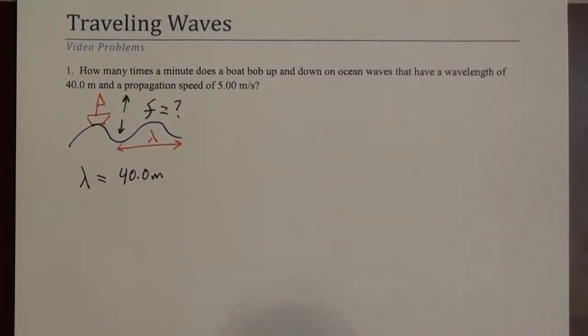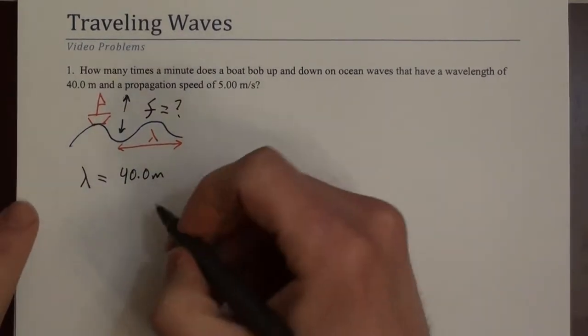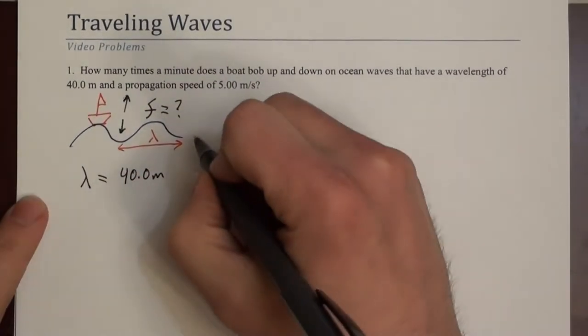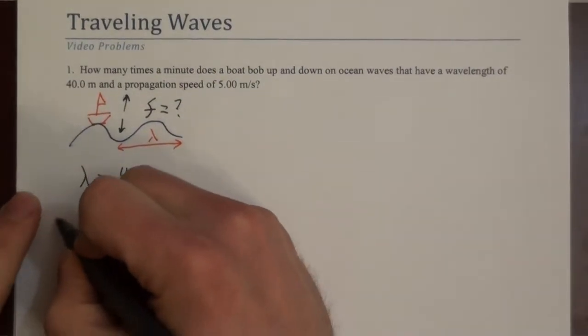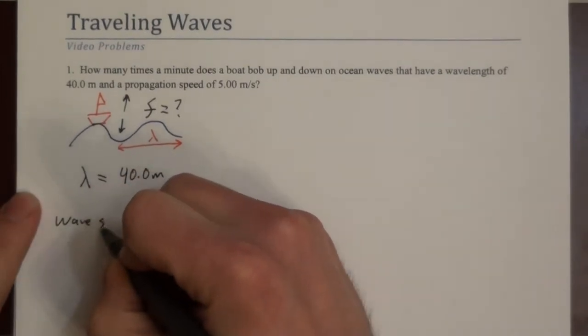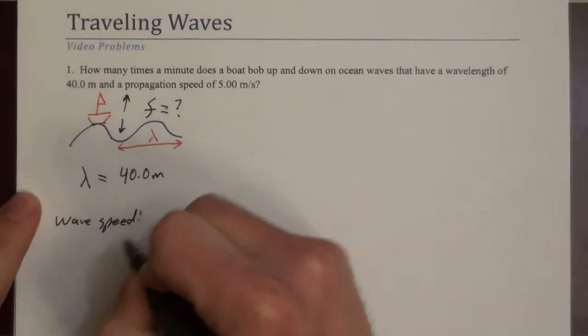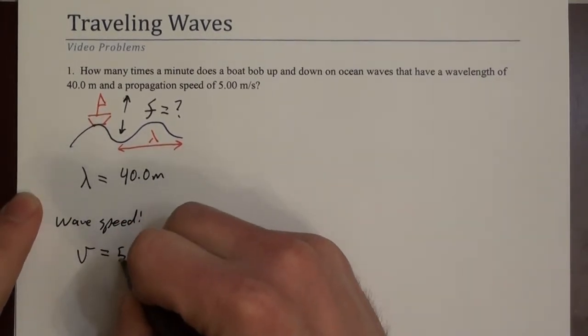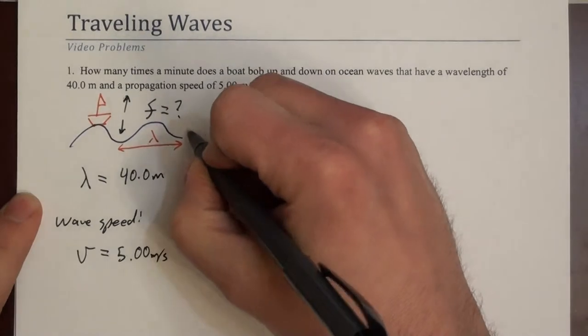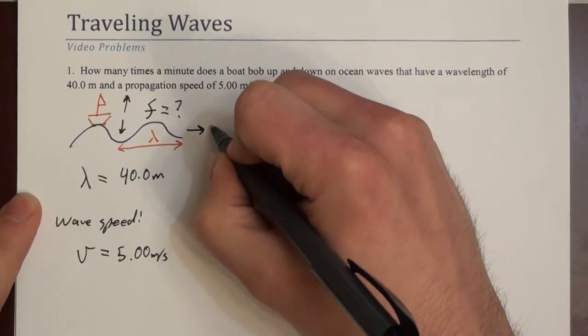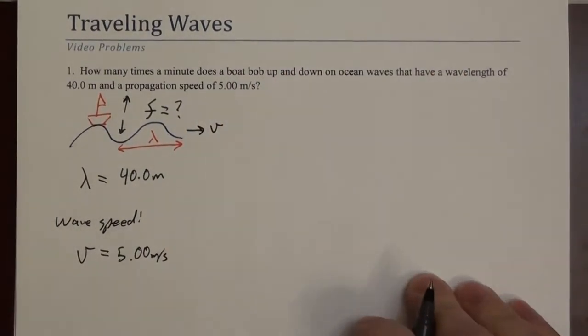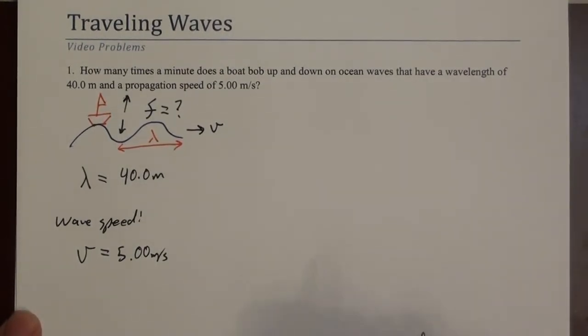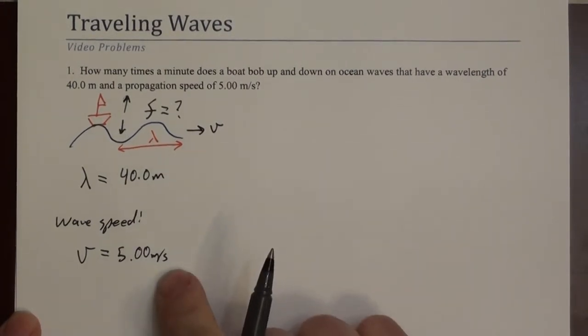We're also given the wave speed. So the wave speed, which is a velocity, is 5 meters per second. That's how fast the wave is traveling, right? So the energy that the ocean is transmitting here is traveling at 5 meters per second.